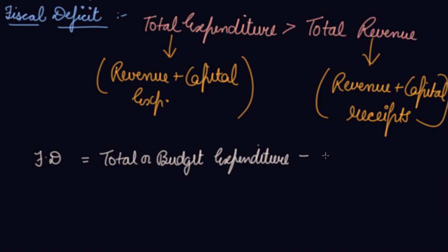minus Total or Budget Receipts. Here, your total includes your Revenue and Capital Expenditures both. So, Fiscal Deficit is in fact equal to Total borrowings and other liabilities of the government.